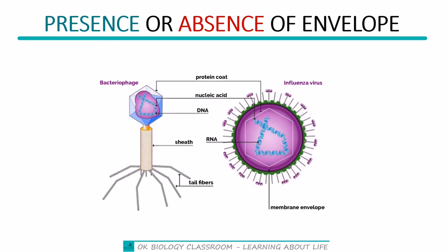There is another structure called a membrane envelope that some viruses have and others don't. Looking at the bacteriophage, outside the protein coat there is no other structure — so there is no envelope. Comparing that to the influenza virus, there is an envelope. The hexagonal structure is the protein coat, and outside that protein coat there is an envelope surrounding it.